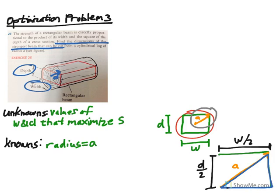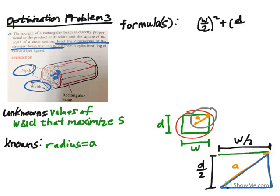Using the Pythagorean theorem: (W/2)² + (D/2)² = A², which is just one leg squared plus the other leg squared equals the hypotenuse squared. That's one thing you can deduce. Another thing you can deduce is the maximum and minimum values for D and W.